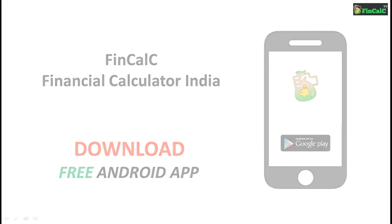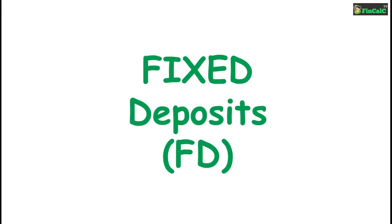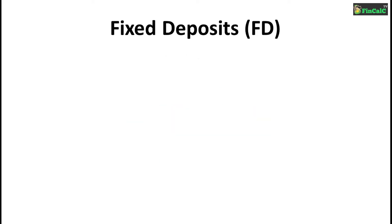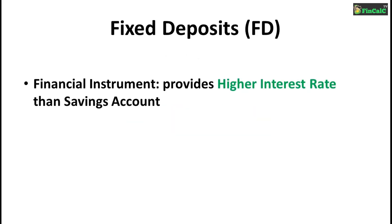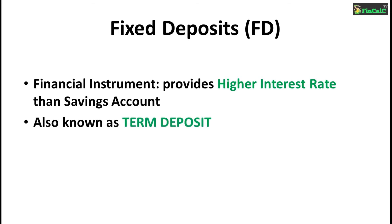Today in this video we are going to see how Fixed Deposit works with the help of examples using our free Android app. A fixed deposit is a financial instrument provided by banks or post offices which provides investors a higher rate of interest than a regular savings account until the maturity date. Sometimes it is also known as term deposits.